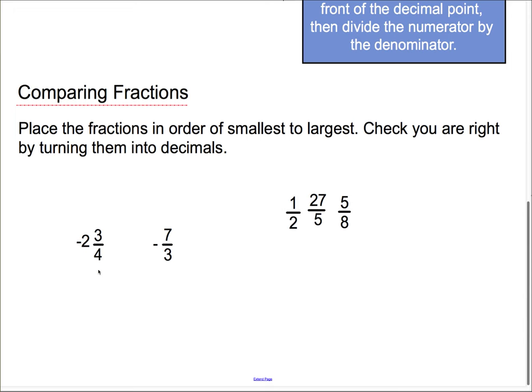This is negative 2 and 3 quarters, so almost negative 3. And 3 goes into 7 two times. So this is actually 2, and then there would be 1 left over, so it would be 2 and a third. And so, 2 and a third isn't quite as big as 2 and 3 quarters. So, 2 and 3 quarters is going to go first. And negative 7 thirds is going to go next.